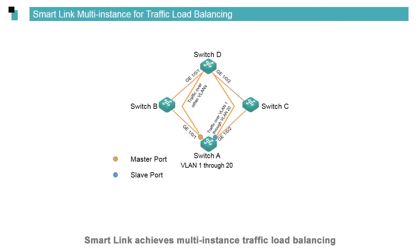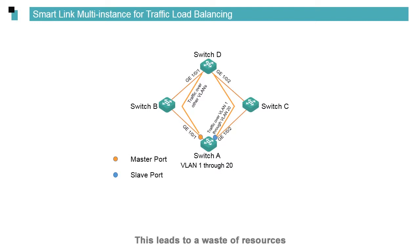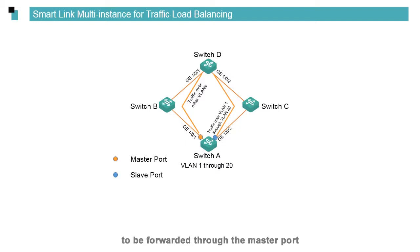Smart link achieves multi-instance traffic load balancing. By default, all data traffic is forwarded through the master port of switch A, causing idle links between switch A and switch C and a waste of resources. In response, configure data traffic in VLAN 11 through VLAN 20 to be forwarded through the slave port and the rest through the master port, achieving traffic load balancing.